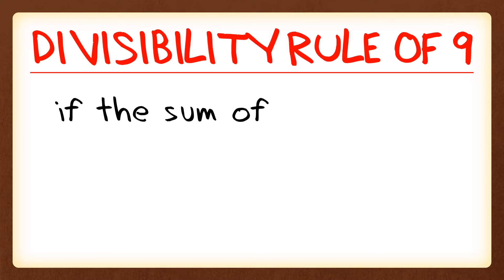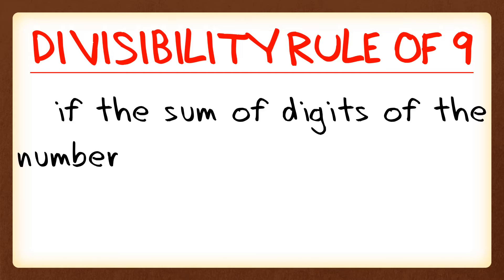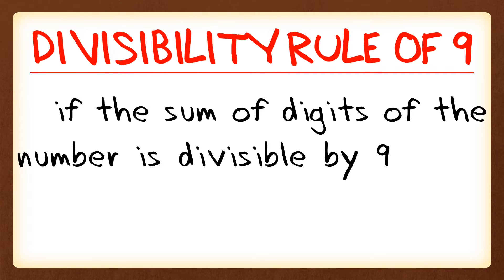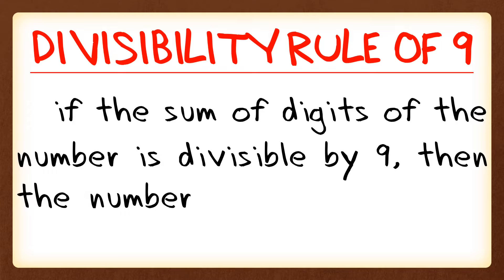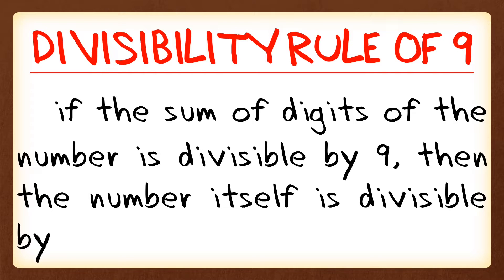Divisibility rule of 9: if the sum of digits of the number is divisible by 9, then the number itself is divisible by 9. So in this video, we're just going to get the sum of the digits of the number. And if it is a multiple of or divisible by 9, then the number itself is divisible by 9.